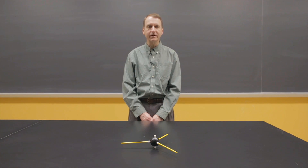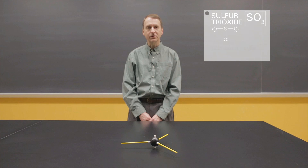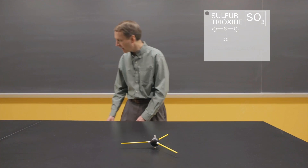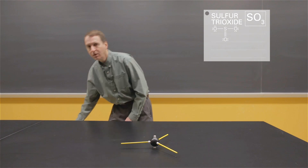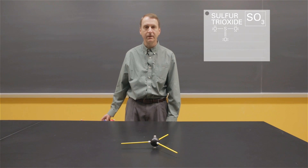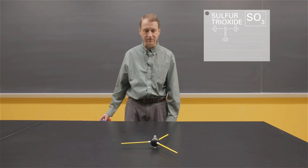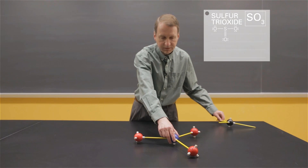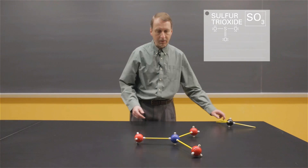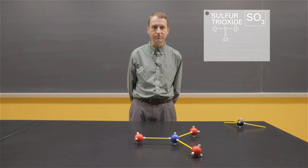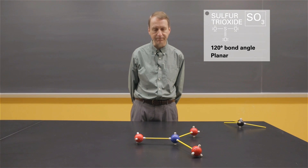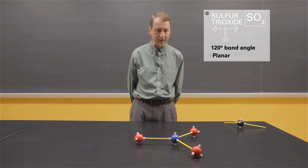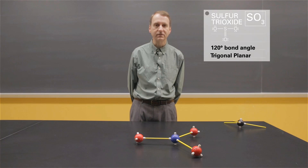For molecules with three electron groups around a central atom, there are two possibilities for the shape. First, let's look at sulfur trioxide. In the Lewis structure of sulfur trioxide, there are three terminal oxygen atoms — two with single bonds and one with a double bond — totaling three electron groups. Here's a model of sulfur trioxide where the red atoms represent the oxygens. Notice all of the oxygens are in the same plane as the sulfur, so I would characterize this shape as trigonal planar, because the plane has three sides.